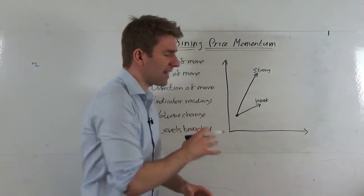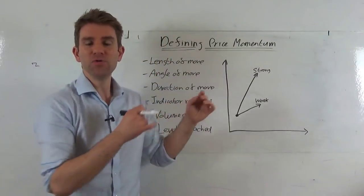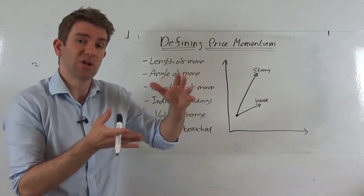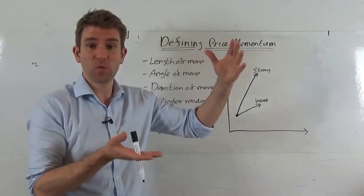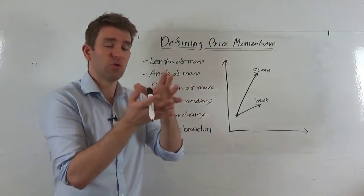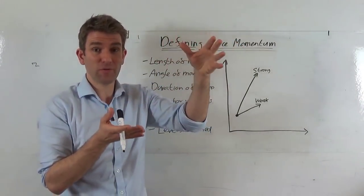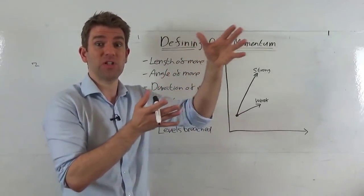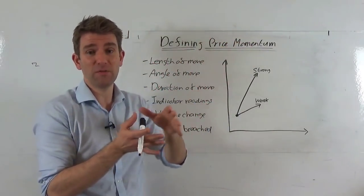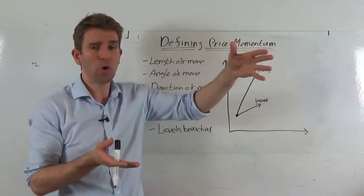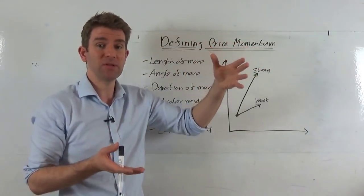Now another thing we can do is we can look at some indicator readings. If we're using a moving average, it's the distance, something like the distance the price moves away from a moving average. Obviously, the shorter term moving average price is moving away from it. That's catching up, but we're still exhibiting good momentum. Moving away from a 20 period, for example, a long way, then that's really powerful momentum.